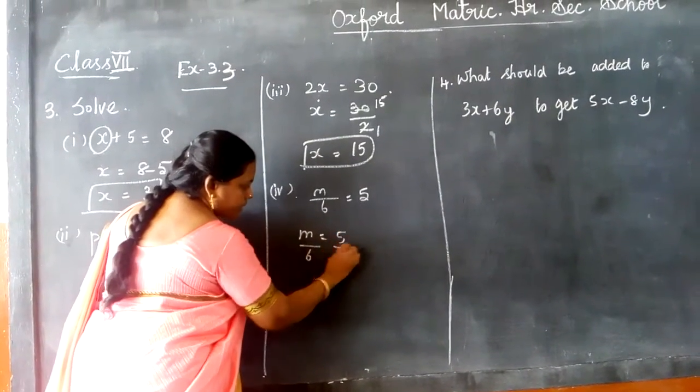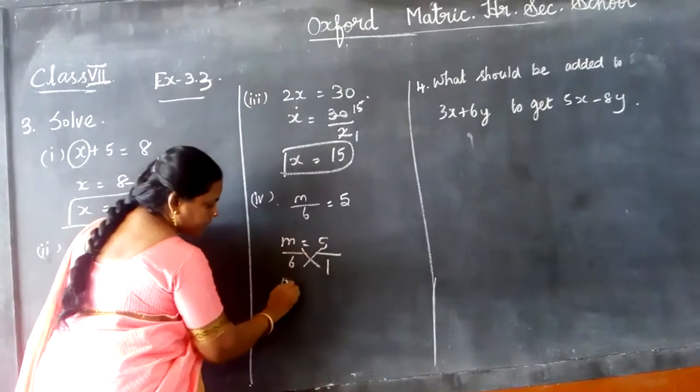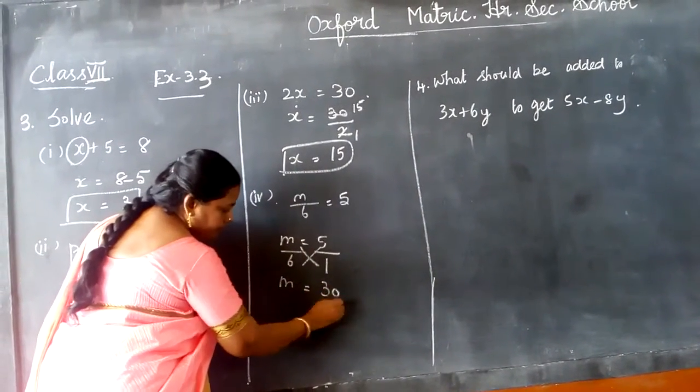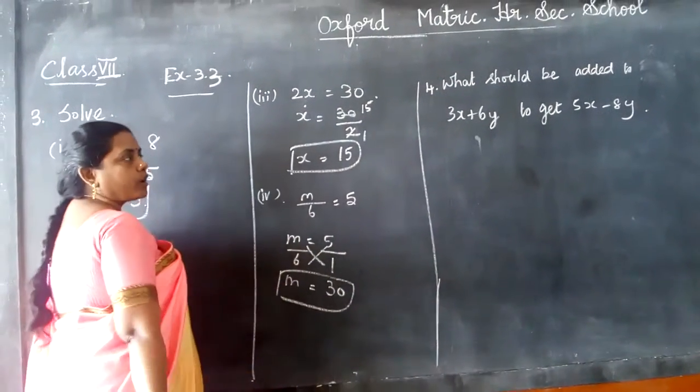For example, if it is given like this, it is understood there is a 1 below this one. Now you cross multiply this, m equals 30. That's all, because 5 times 6 are 30, m times 1 is m, you got the answer.